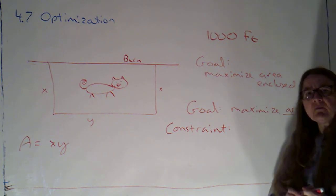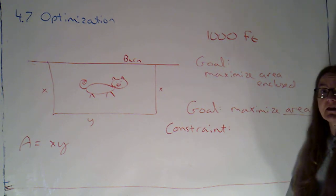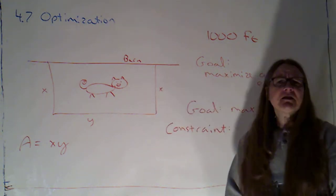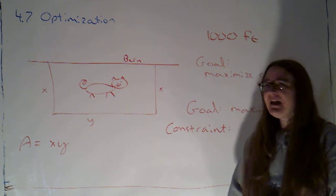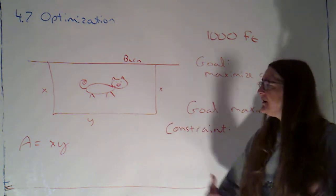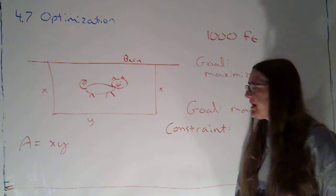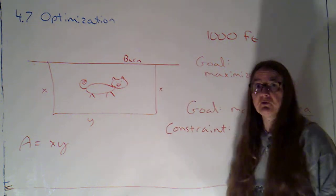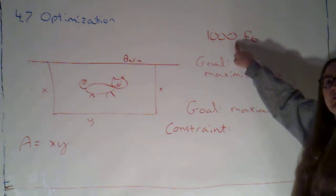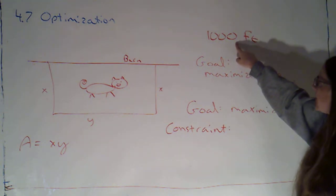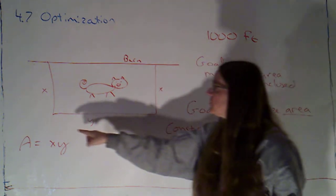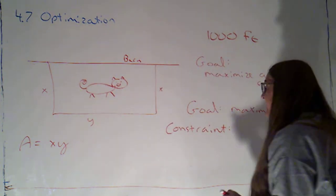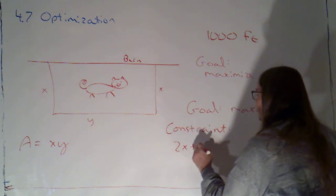The constraint is some limitation, often a limitation on the resources that we have, that's going to put some limits on the problem. Because if you think about it, if you wanted to maximize the area, just go buy more fencing. So our constraint is that we just have a thousand feet of fencing. That's going to give me another relationship between X and Y. If I add up all of the sides of fencing that I have to build, that's going to add up to one thousand. Two X plus Y equals a thousand.